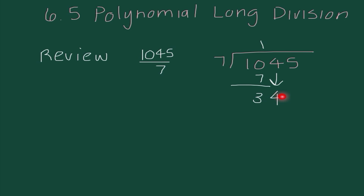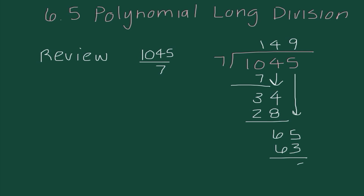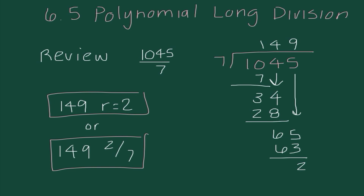Next I need to think, how many times does 7 go into 34? I know that 7 goes into 34 four times. 4 times 7 is 28. When I subtract, I get 6. And now I'm going to bring down our 5. How many times does 7 go into 65? 7 goes into 65 nine times. 9 times 7 is 63, and we are left with 2. There are really two ways we could write our answer: our answer is 149 with remainder 2, or we could say this is equal to 149 and 2/7ths. The 2 is from my remainder and 7 is from what we were dividing by. I would accept either of these two answers.